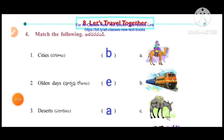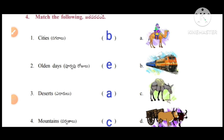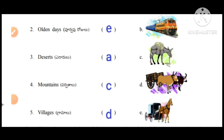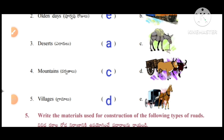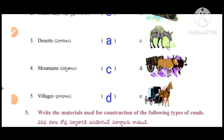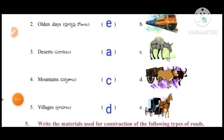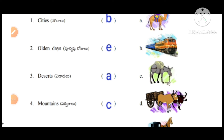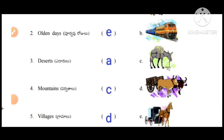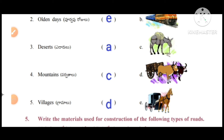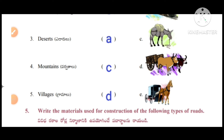Match the following. First one: cities — train. Olden days — horse vehicles, bullock carts and horse carts. Deserts — camel. Mountains — donkeys. Villages — bullock carts.